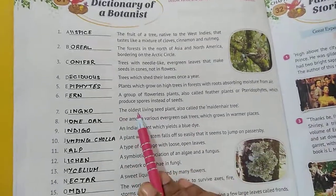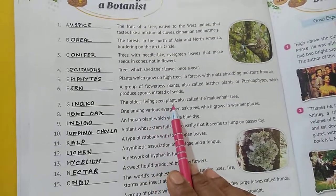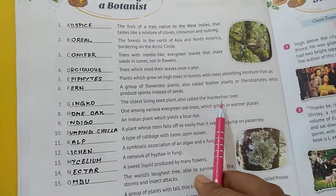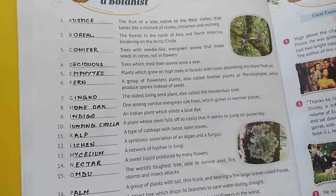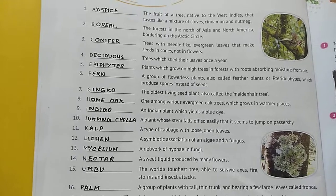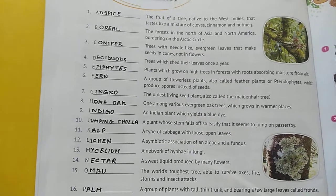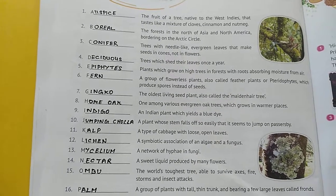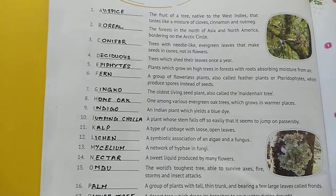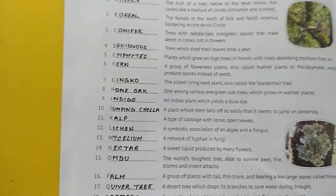The seventh one: the oldest living seed plant, also called the maidenhair tree — jo sabse purana seed plant hai, and that is also called the maidenhair tree. Its name is ginkgo.